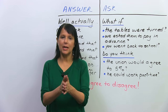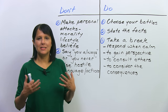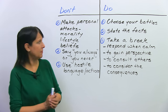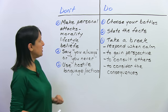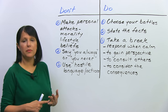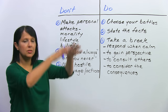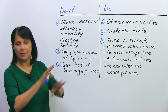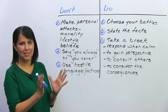Next, we will look at the psychological techniques that you should keep in mind when you're disagreeing. Let's look at what you should not do and what you should do. First, don't make personal attacks at somebody's morality, their lifestyle, or their beliefs — their political beliefs, their religious beliefs. Don't attack them personally. If you're discussing a subject in general, don't say, 'Oh, but you do this,' or 'You live like that.' Don't make it personal — that is not considered acceptable. Discuss the situation in general.